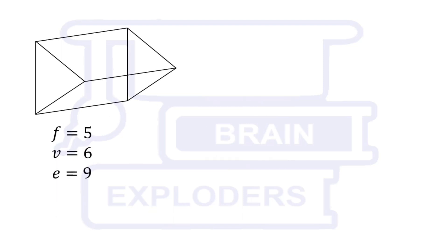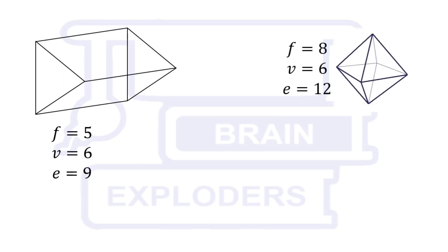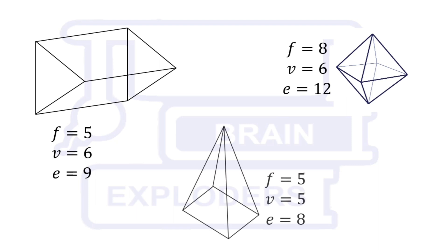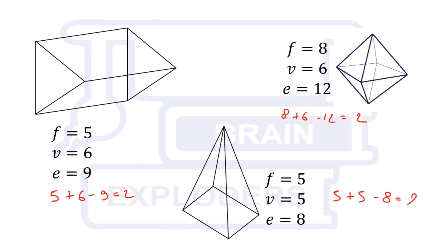Let's check for the triangular prism and for the square pyramid also. So here 5 plus 6 minus 9 is equal to 2, and 8 plus 6 minus 12 is equal to 2, and 5 plus 5 minus 8 equals 2. This is Euler's polyhedron theorem and it is true for all 3D shapes: the sum of the number of faces and vertices minus number of edges is equal to 2.